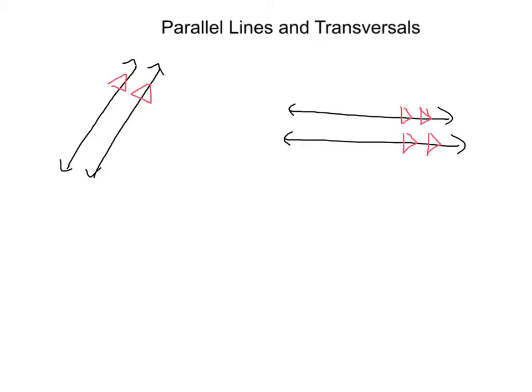A new term that you might not have heard before is called a transversal. A transversal is just a line that is crossing between two different lines. For example, we have that transversing those parallel lines. Over here we have this line transversing these two parallel lines.